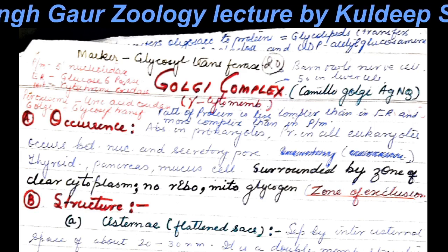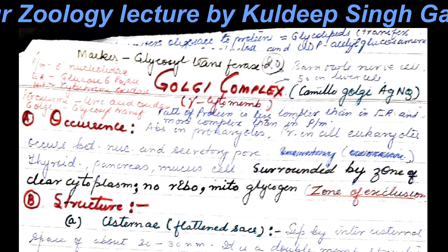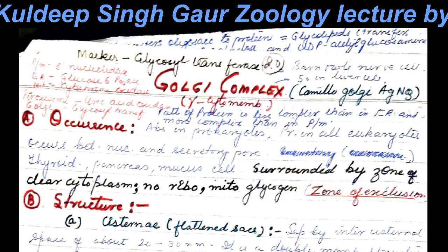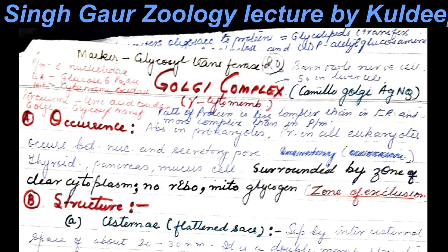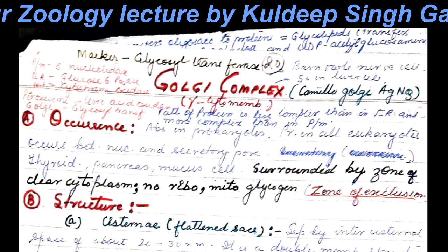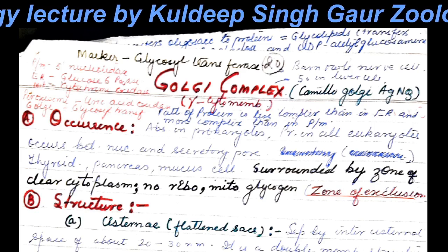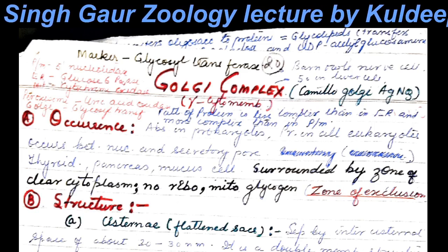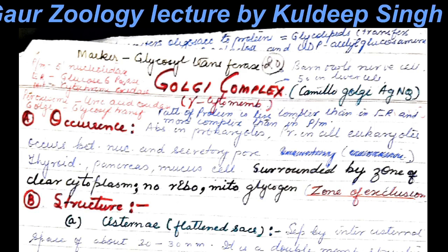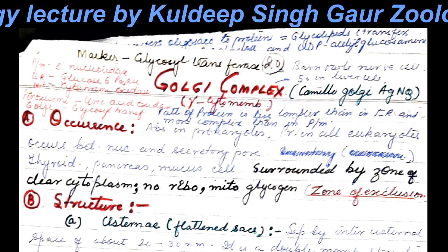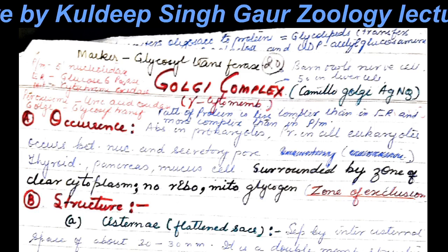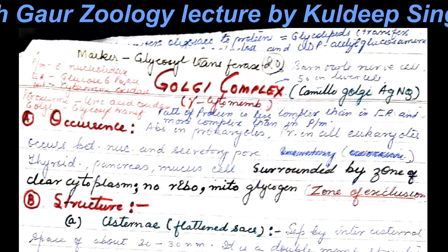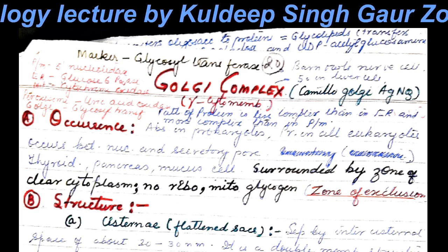As far as occurrence is concerned, Golgi complex is absent in prokaryotes and present in all eukaryotes. It occurs between the nucleus and the secretory pole of the cell. They are found in abundance in thyroid, pancreas, and mucus cells. Wherever they are present, they are surrounded by a zone of clear cytoplasm that lacks ribosomes, glycogen particles, or other organelles — termed the zone of exclusion.